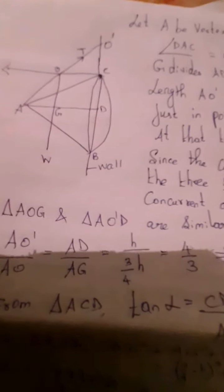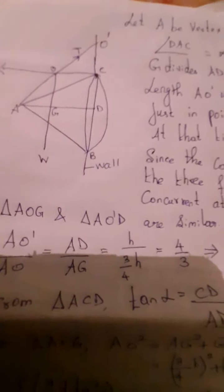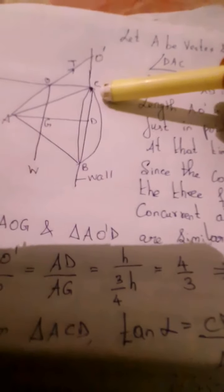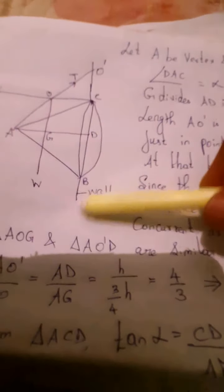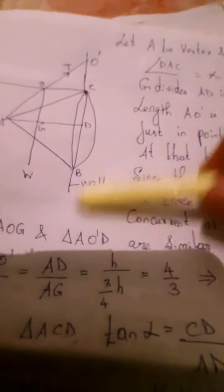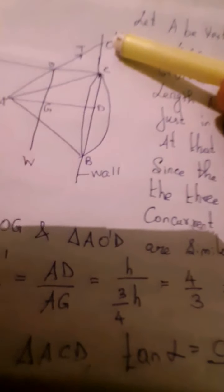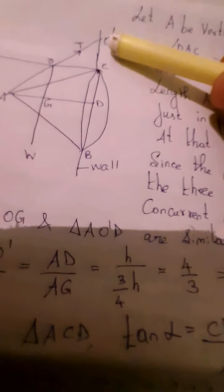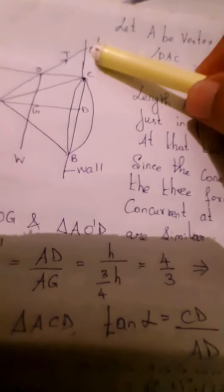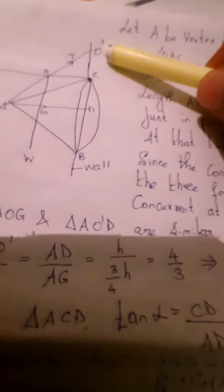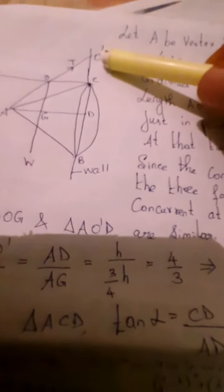The cone is placed with its base BC resting flatly on the smooth vertical wall. It is supported by a string attached to vertex A and to a point O' in the wall. The greatest possible length of the string AO' is what we need to find. Let A be the vertex, AD = H, and angle DAC = alpha.